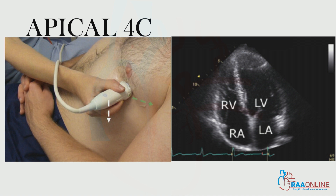Once you place the probe, on the right side of the image you get the left ventricle and the left atrium, and on the left hand side you get the right ventricle and the right atrium. The structures seen are the LA, mitral valve, and LV on one side, and the RV, tricuspid valve, and RA on the other. This view helps identify pathologies of right ventricular function, left ventricular function, and the interventricular septum.